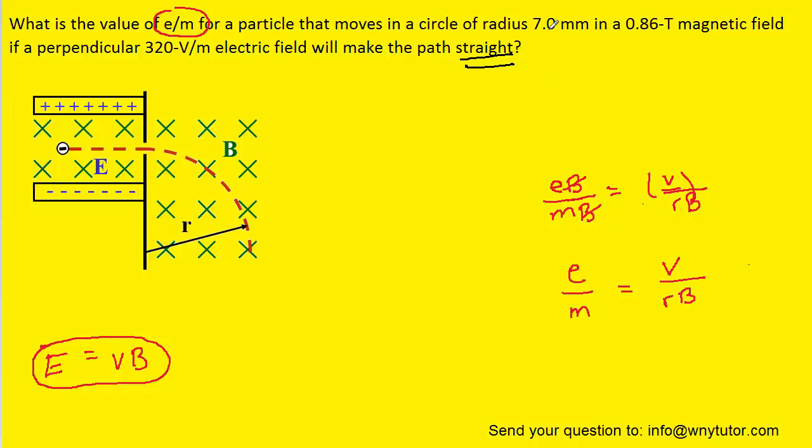So the radius is given to us in the problem. Notice that we'll have to multiply that by 10 to the minus 3 in order to get it into meters. The magnetic field is given to us in a standard unit of Tesla. We don't actually have the speed, but that's alright because we have this equation over here.